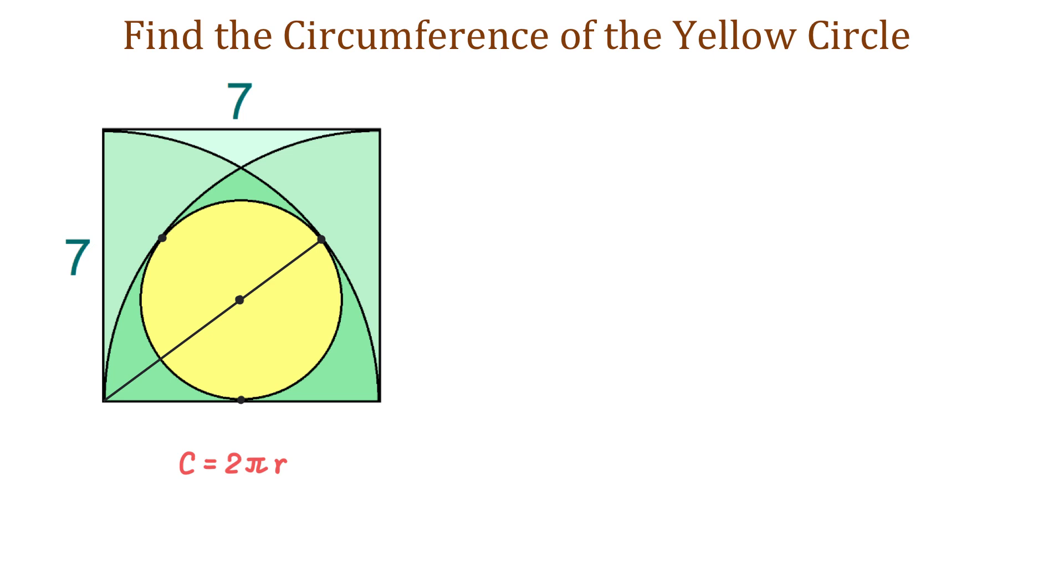Now, let the radius of the yellow circle be r. Then, because the radius of the quarter circle is 7 units, the distance between the centers will be 7 minus r.